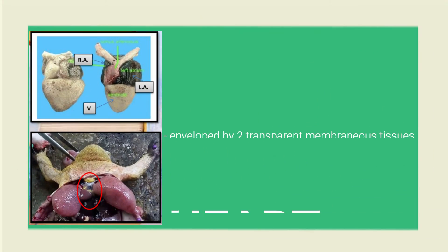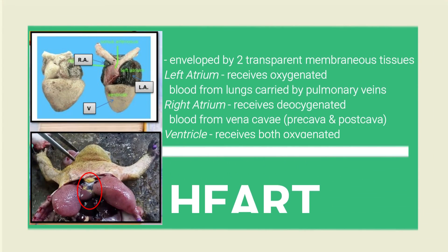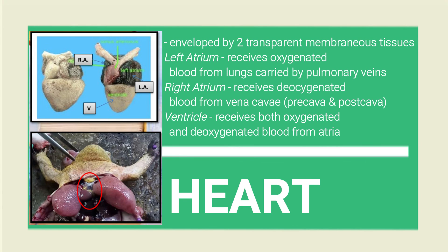Lastly, but not least, the heart. As we all know, the heart pumps blood throughout the body. The heart of a toad has three chambers — the ventricle and two auricles — different from the four-chambered heart of the human. There are also two small chambers which are the conus arteriosus, which direct the blood into the right chamber.